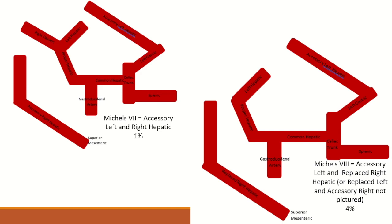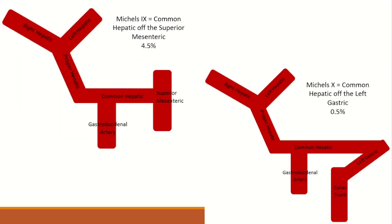Michels VIII is considered to be one of two options: either a normal left hepatic artery with an accessory left hepatic and a replaced right hepatic, or a normal right hepatic artery with an accessory right hepatic and a replaced left hepatic. Michels IX and X involve the common hepatic artery arising from somewhere other than the celiac trunk — Michels IX arises from the superior mesenteric artery, while Michels X comes from the left gastric artery. Beyond these ten classes, you may very well see some other variation on your IR rotations.